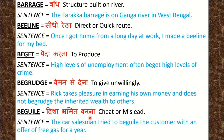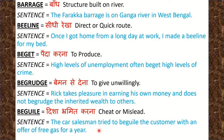Next word is Beguile. Beguile means दिशाभ्रमित करना, यानि cheat or mislead. Sentence: The car salesman tried to beguile the customer with an offer of free gas for a year. एक साल की free gas का offer दिखाते हुए car salesman ने customer को भ्रमित किया, यानि उसे धोखा दिया.